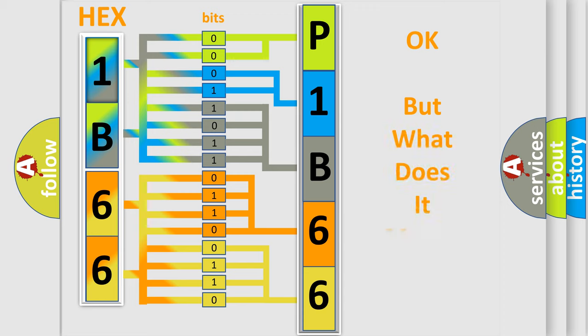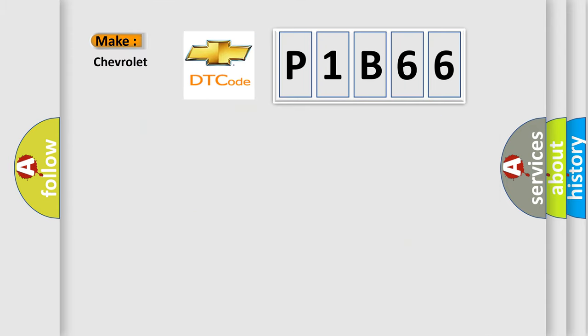The number itself does not make sense to us if we cannot assign information about what it actually expresses. So, what does the Diagnostic Trouble Code P1B66 interpret specifically for Chevrolet car manufacturers? The basic definition is: Lost communication with ECM or PCM.